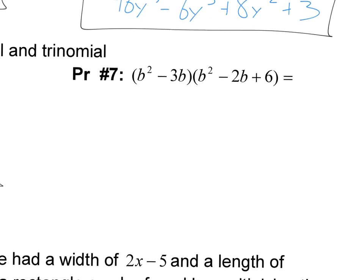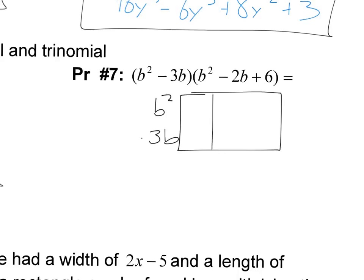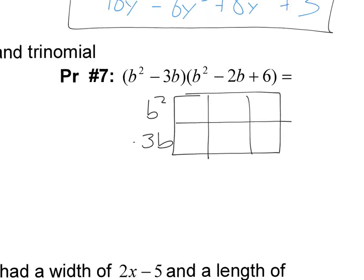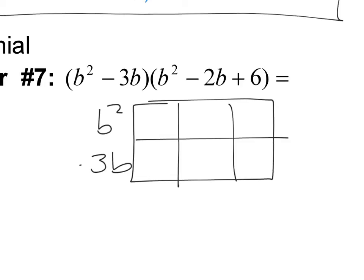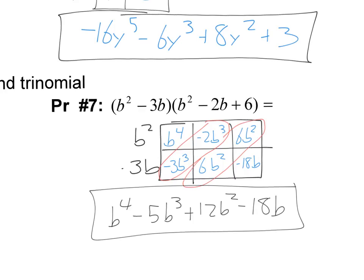Go ahead and try this one — make your box. I've got B squared here and negative 3B here. Put our lines in and go. Here are all the parts in the box. Remember when you have B squared times B squared, you add the exponents to get B to the fourth. I had like terms here and like terms here, so I added them up. We've got B to the fourth minus 5B cubed plus 12B squared minus 18B.